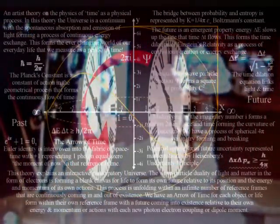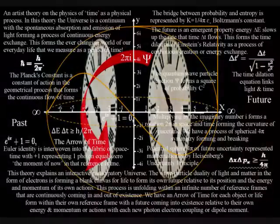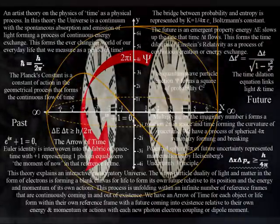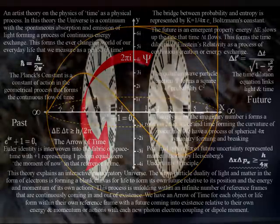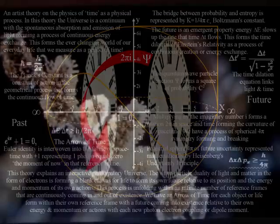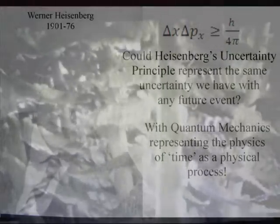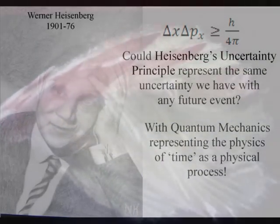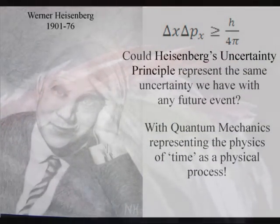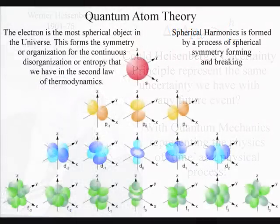In this theory the mathematics of quantum mechanics represents the physics of time as a physical process, with classical physics representing processes over a period of time as in Newton's differential equations. Everything is a wave over a period of time relative to the atoms of the periodic table with particle characteristics only as the future unfolds in that frame of reference. Therefore each individual is in the center of their own reference frame as an interactive part of this process with Heisenberg's uncertainty principle representing the same uncertainty we have with any future event at the smallest scale of this process.